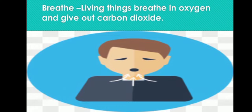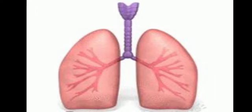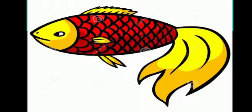The first difference is breathing. Living things breathe in oxygen and give out carbon dioxide, but plants take in carbon dioxide and give out oxygen. Animals use lungs, fish use gills, and plants use pores to breathe. Non-living things do not require oxygen, so they do not breathe.